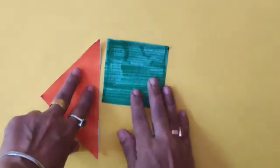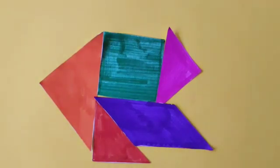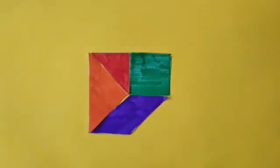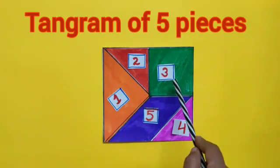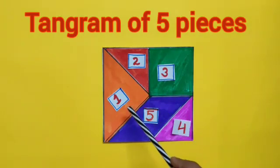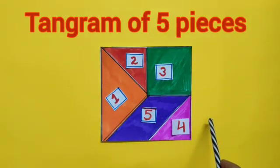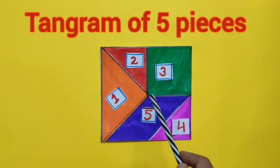Let's join these pieces in different ways to make a square. We have joined these pieces, dear children, but the shape of square is not formed. Let's try once again. Now see what is the shape of this figure. The square made from 5 pieces is called a tangram. Tangram is a Chinese puzzle, dear children, in which a square is cut into 5 different pieces of different shapes.